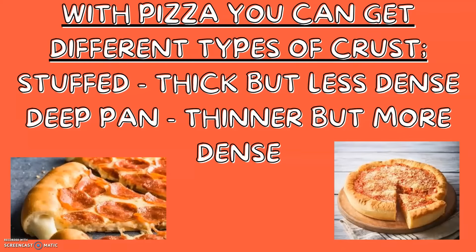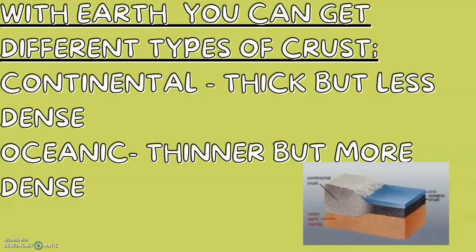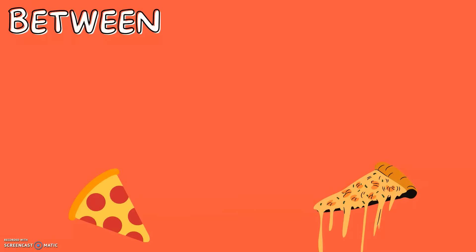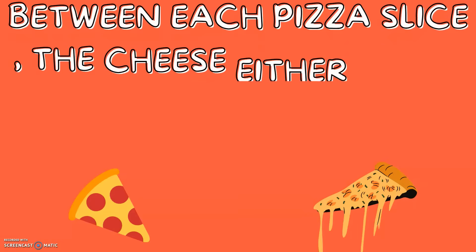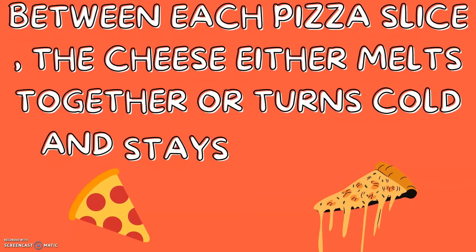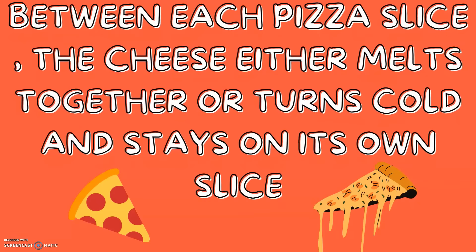It's the same with the Earth — you can get different types of crust: continental, which is thicker but less dense, or oceanic, which is thinner but more dense. Between each pizza slice, the cheese either melts together or turns cold and stays on its own slice.